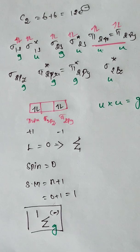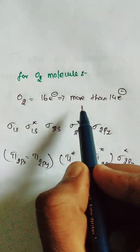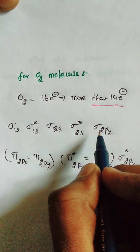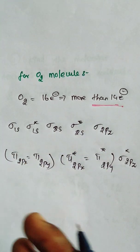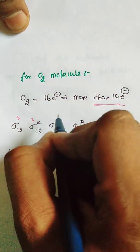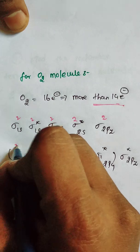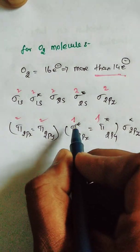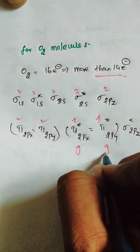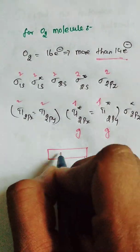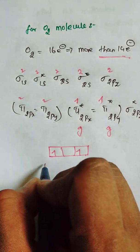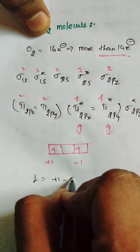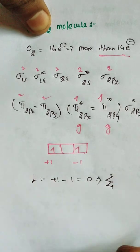Next, for the O2 molecule: O2 has 16 electrons, so it follows the more-than-14-electron configuration where sigma 2pz comes before pi 2px and pi 2py. Filling 16 electrons, the last two electrons go into pi* 2px and pi* 2py orbitals — one electron in each. These are pi star orbitals, which are gerade. The lambda values are +1 and -1, giving total L equals 0 — again a Sigma term.